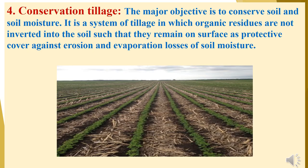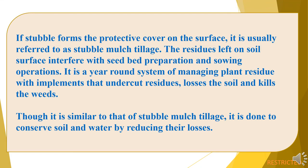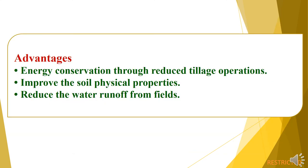The fourth type of modern tillage is conservation tillage. The major objective is to conserve soil and soil moisture. It is a system of tillage in which organic residues are not inverted into the soil, such that they remain on the surface as a protective cover against erosion and evaporation losses of soil moisture. If stubble forms the protective cover, it is referred to as stubble mulch tillage. The residue left on the soil surface interferes with seedbed preparation and sowing operations. It is a year-round system of managing plant residue with implements that undercut residue, loosen the soil, and kill weeds. Advantages: first, energy conservation through reduced tillage operations; second, improved soil physical properties; third, reduced water runoff from fields.